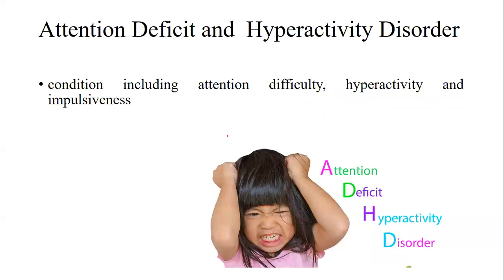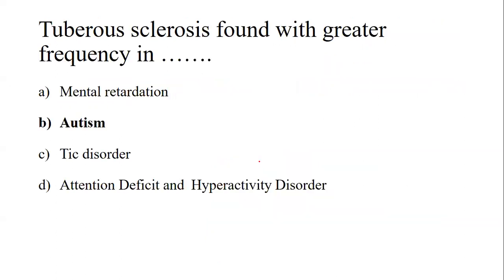The last option was ADHD — attention deficit and hyperactivity disorder — a condition including attention difficulty, hyperactivity, and impaired behavior. Tuberous sclerosis cannot be seen in MR, cannot be seen in tic disorder, and cannot be seen in ADHD. The correct option is option B, autism. 40 to 50 percent of tuberous sclerosis cases could be autistic.